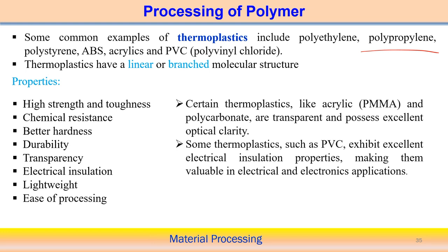Properties of thermoplastics include very high strength and toughness, chemical resistance, better hardness, durability, transparency, electrical insulation, lightweight, and ease of processing — all of which make them applicable in different areas. Certain thermoplastics, such as acrylics and polycarbonate, are transparent and possess excellent optical clarity, making them suitable for applications where optical clarity is required.